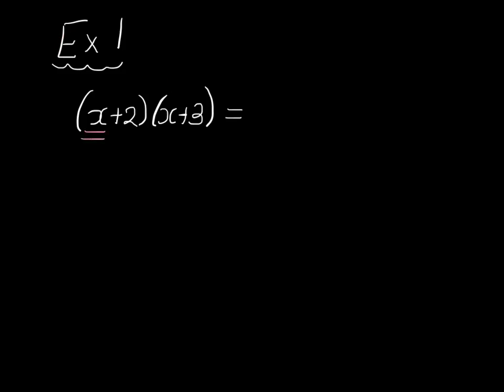We can say this is the same as x multiplied by the x plus 3 here. And we can say that it is plus, because of the plus sign here, plus 2 multiplied by the bracket x plus 3. So what we're saying is, it's x multiplied by everything in there, add 2 multiplied by everything in there. So we have x multiplied by x plus 3, plus 2 multiplied by x plus 3.